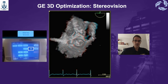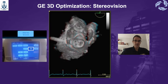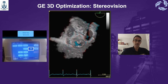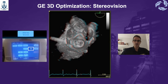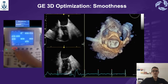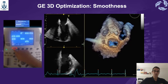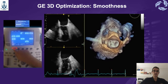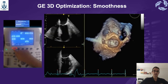Another option that GE offers is stereo vision. But to appreciate this, you need 3D glasses, and you will be able to get — like in the cinema — a really 3D image. You can also use smoothness for getting a better smoothing of the image. You can increase it, as shown here, or decrease it.